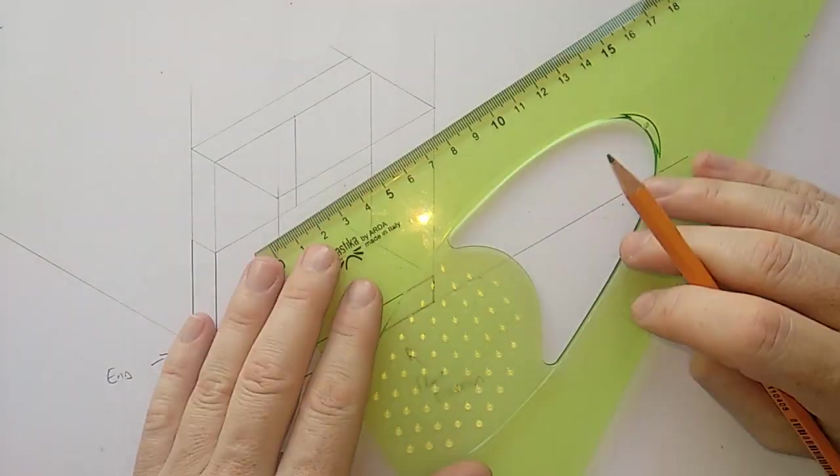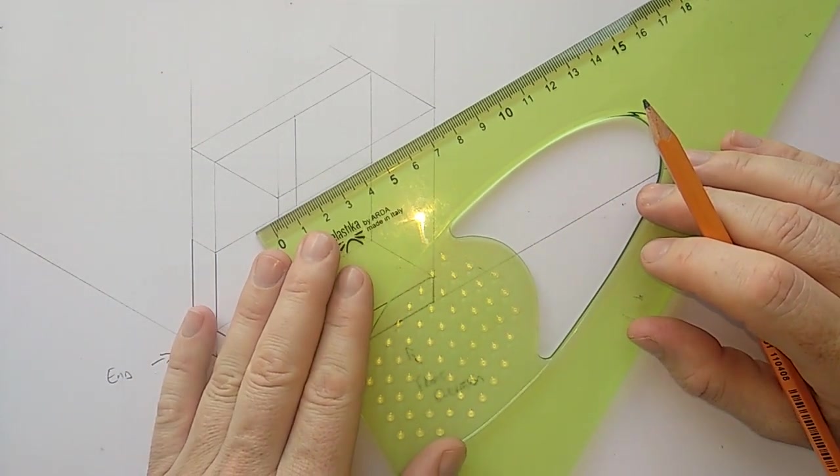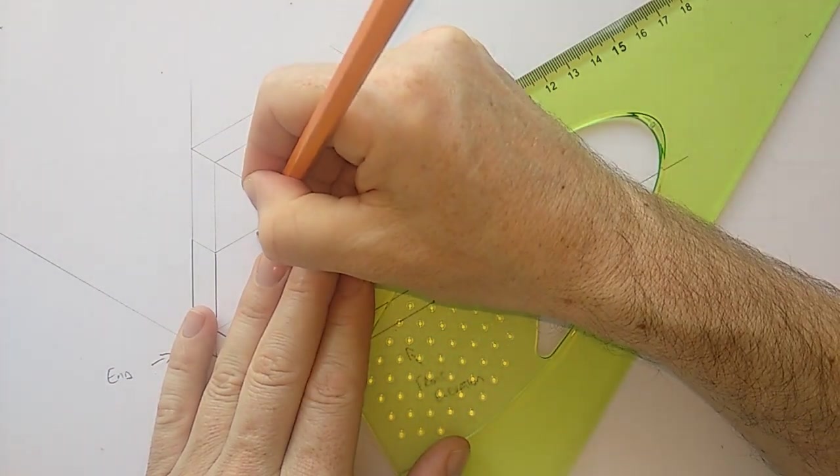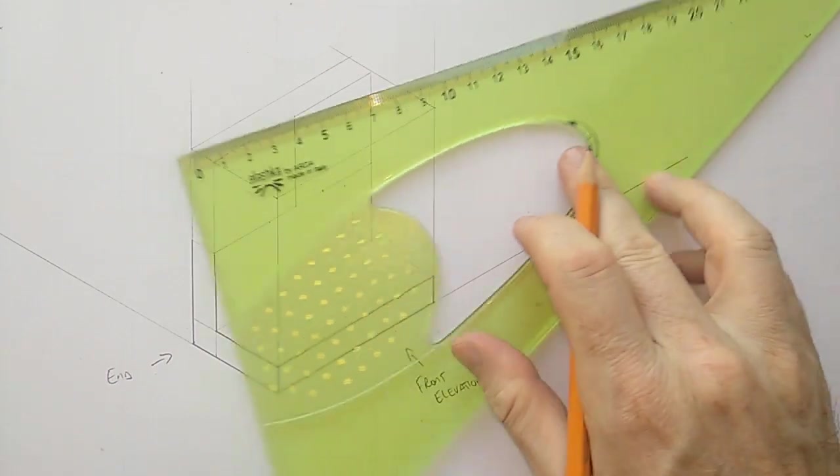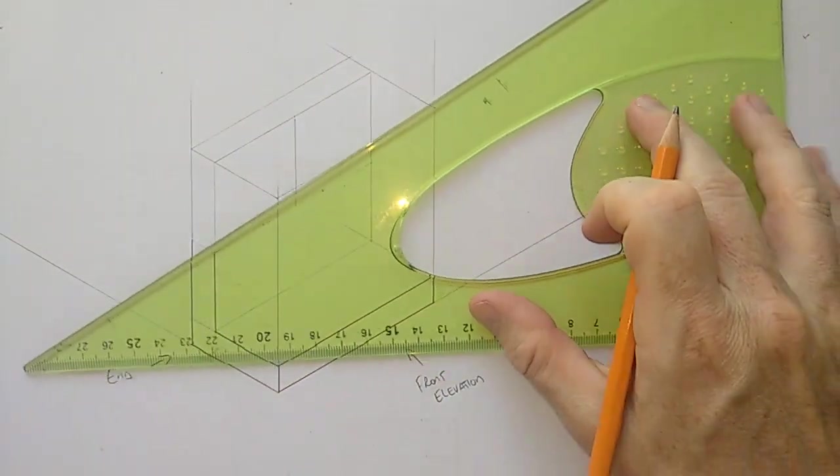What we'll do then is we'll come 12 off this line that I already have. I'll set that to 12. 12 and 24. Okay, so that's the top edge of it.